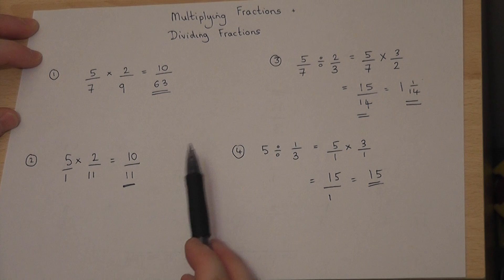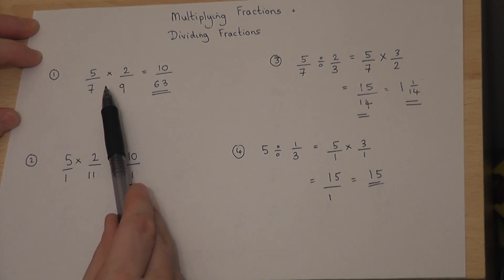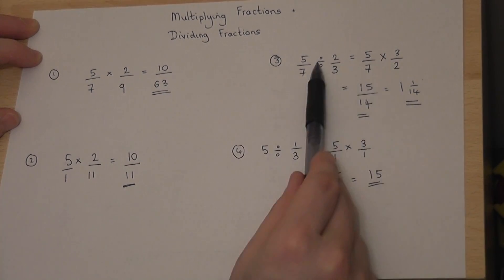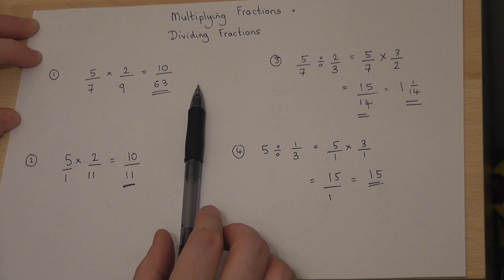When we times, we times the tops and the bottoms. When we divide, we reciprocate the second fraction and turn the divide into a times. And that's all there is to it.